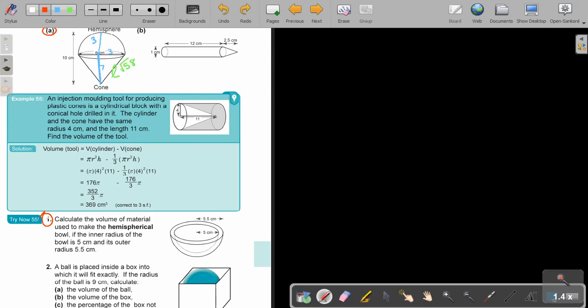Okay, calculate the volume of the material used to make the hemispherical bowl. If the inner radius of the bowl is 5, and the outer is 5.5. Okay, so let's start. So, it's just 2 again that you are going to subtract. So, the volume, this is number 1, the volume of material is the volume of the outer hemisphere minus the volume of the inner. And that, don't forget, it's half, it's a hemisphere. So, let's just say, it's a half. And what is the formula?